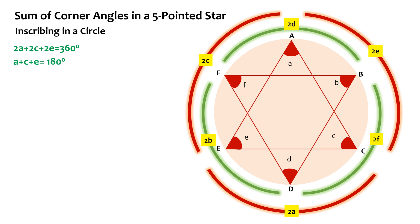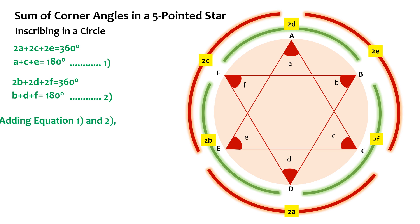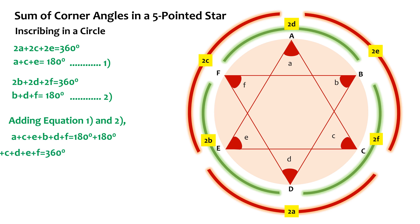Because angle B has intercepted arc DF, arc DF will be twice angle B. Similarly, arc EA = 2C, arc FB = 2D, arc AC = 2E, and arc BD = 2F. From the diagram, arcs 2A, 2C, and 2E complete a full circle, giving us A + C + E = 180° (equation 1). Similarly, arcs 2B, 2D, and 2F also complete a circle, giving B + D + F = 180° (equation 2). Adding equations 1 and 2: A + B + C + D + E + F = 360 degrees.